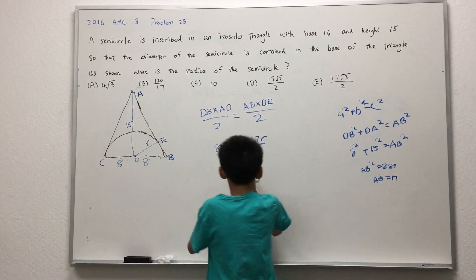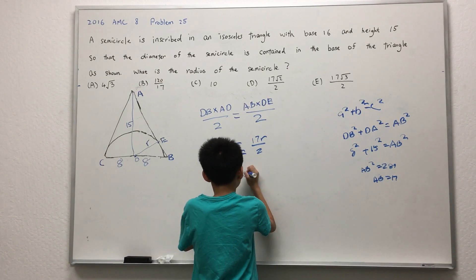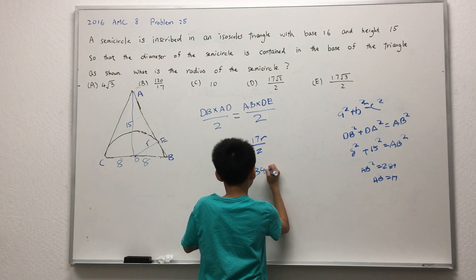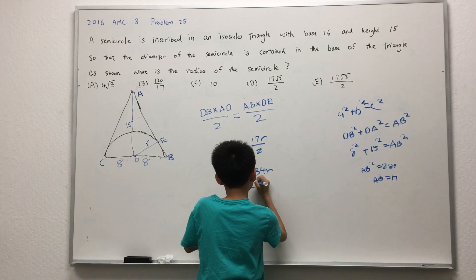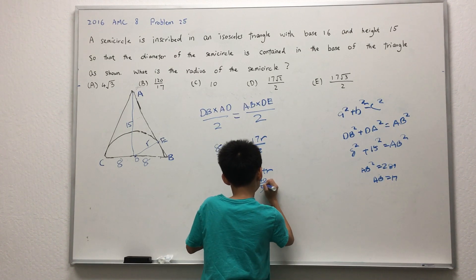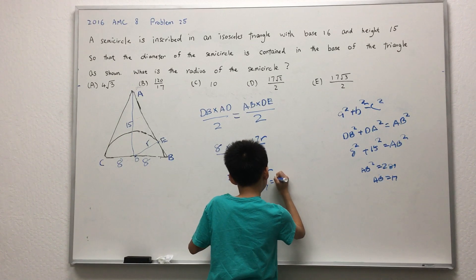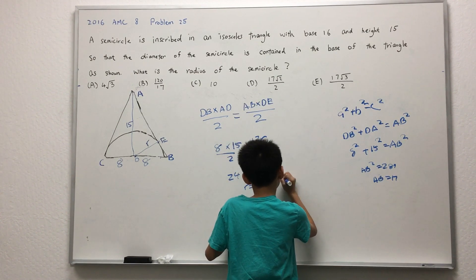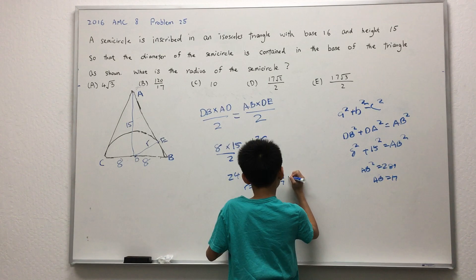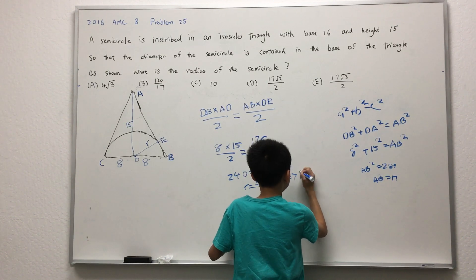Solving for R, we get 240 equals 34R, and R equals 240 over 34, which simplifies to 120 over 17. Which is answer choice B.